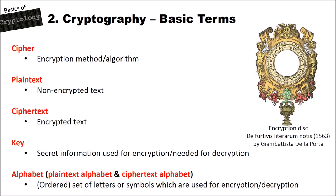Here are the first basic terms that you will find in every book about cryptology or cryptography. The first thing is the cipher. The cipher is an encryption method or algorithm. In many books and papers you also find cipher used for ciphertext, but we define cipher only as the encryption method or algorithm.